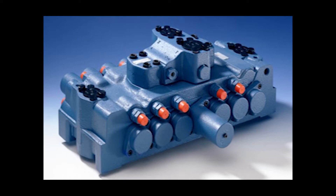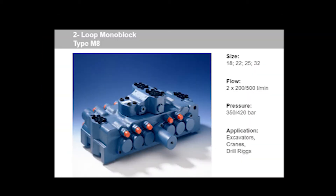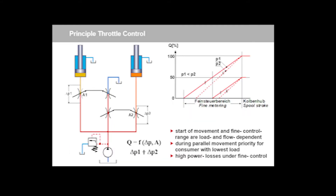Compact Valve Blocks Series M8 are primarily used for the control of standard functions in track-driven and wheeled excavators, such as arms, buckets, transmission, dipper, and slew, swing, within a two-circuit hydraulic system. They may even be usefully used in drilling devices and cranes.